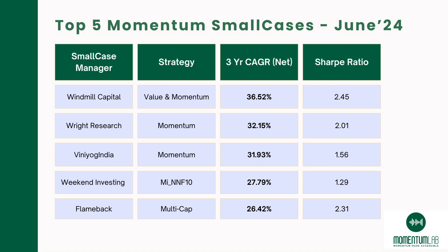The list of the top five for June 2024 are Windmill Capital, Right Research, Vineo India, Weekend Investing, and Flameback. This table shows in detail the strategy, the manager, the CAGR, and the Sharpe ratio. We have a blog that details the entire process, analysis, and the data provided in this video — I will be linking that in the description and I urge all of you to go and check it out.